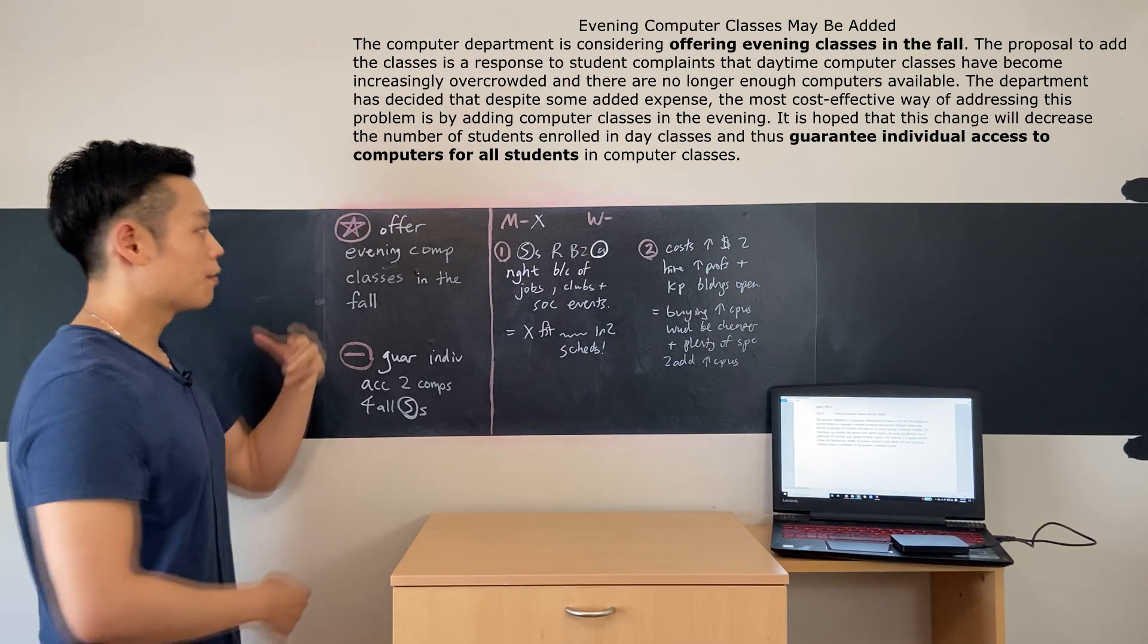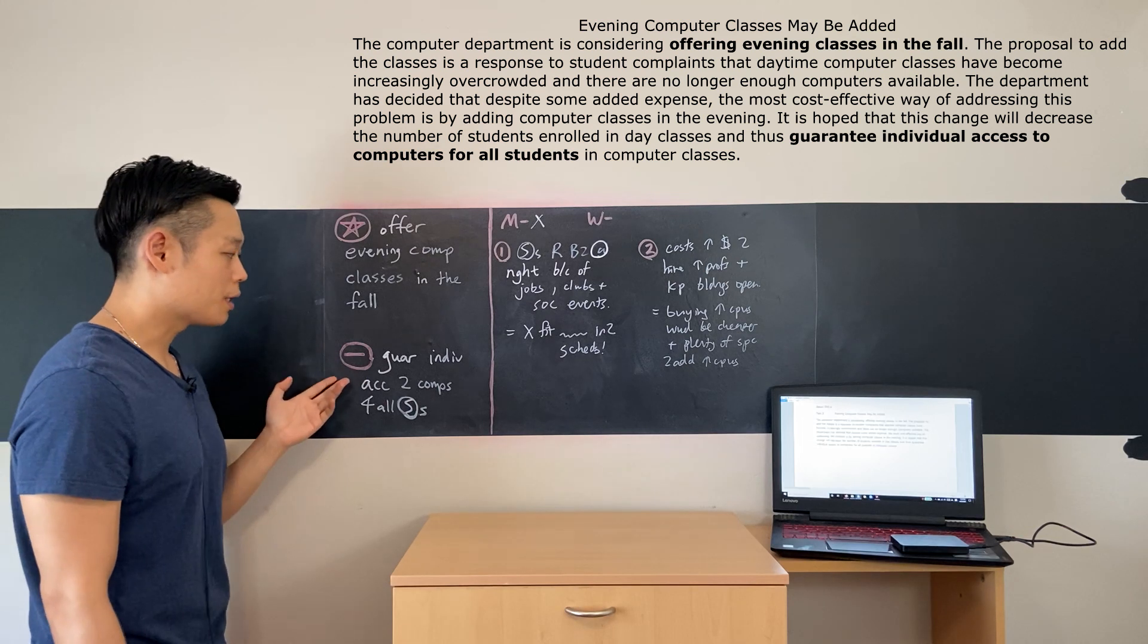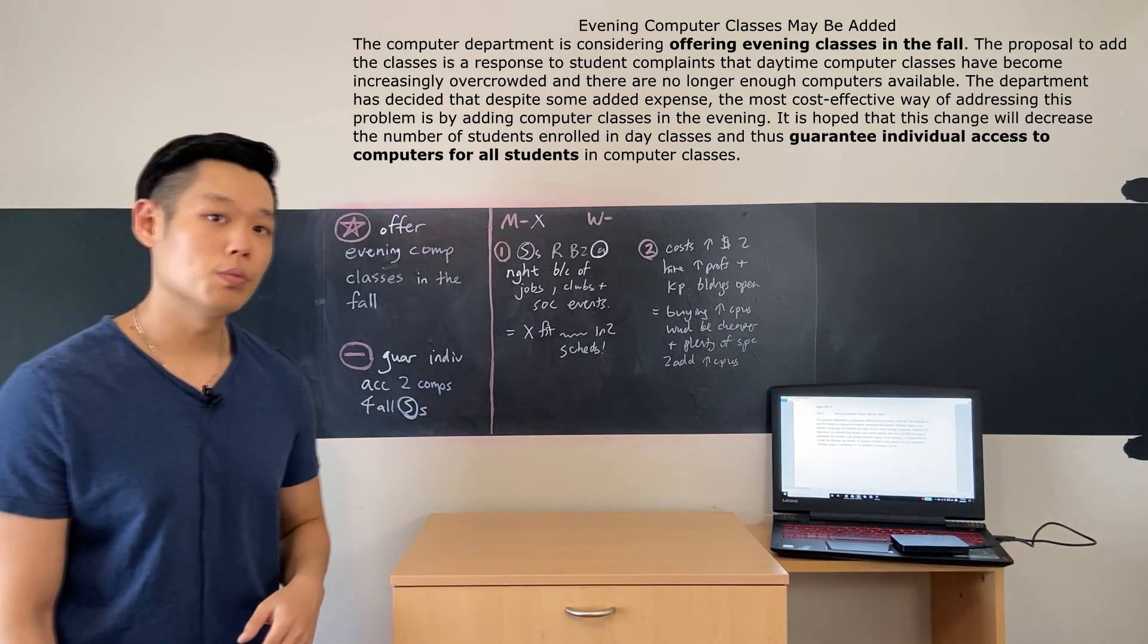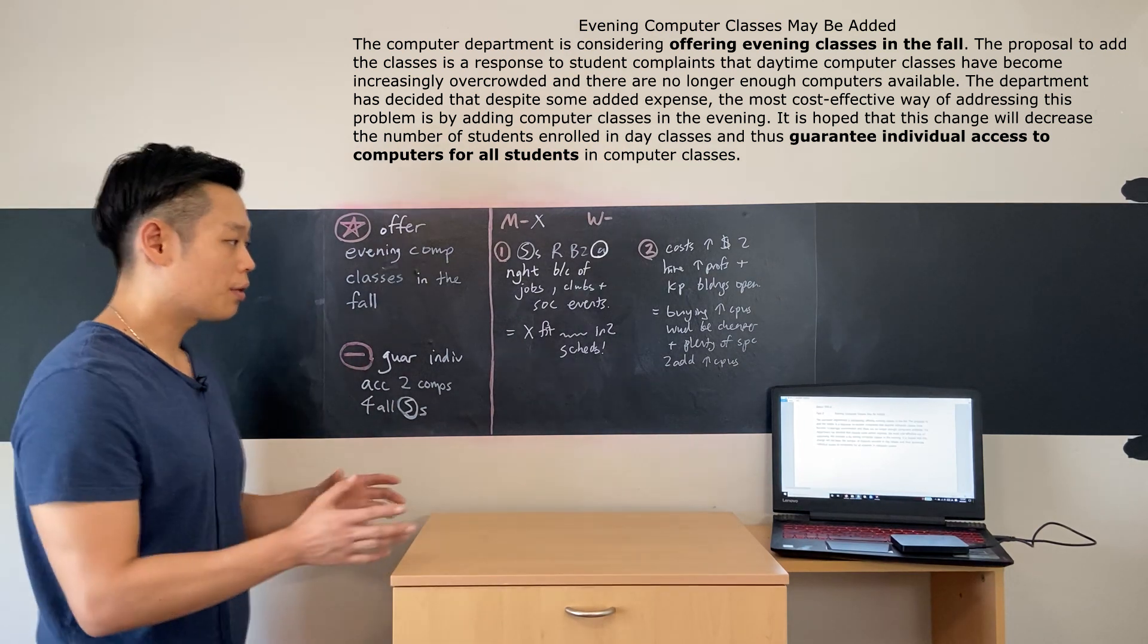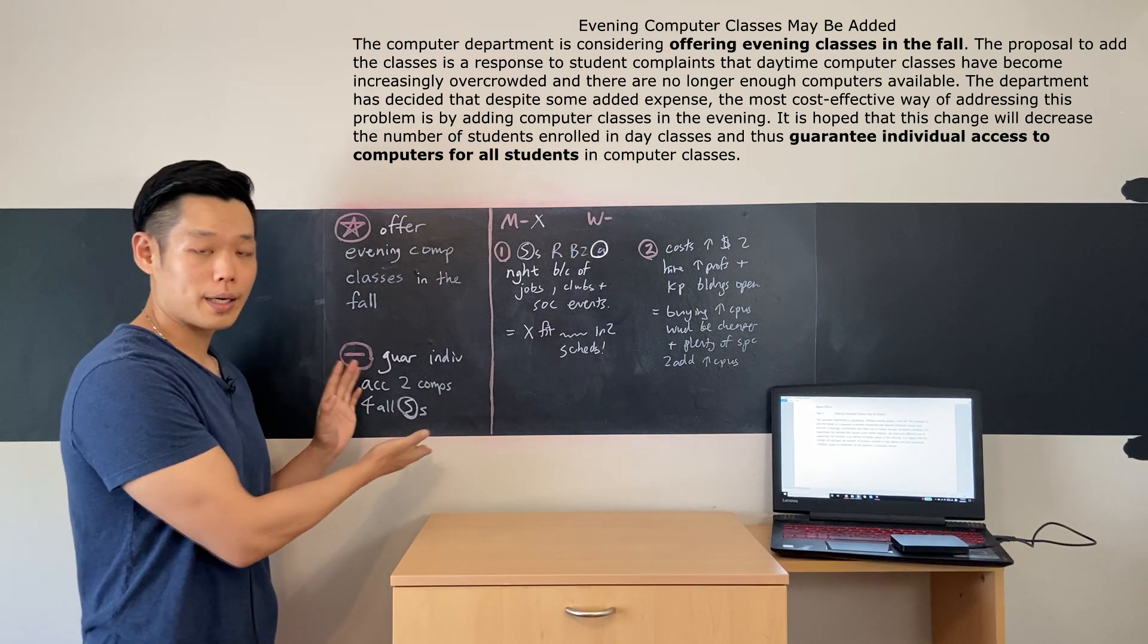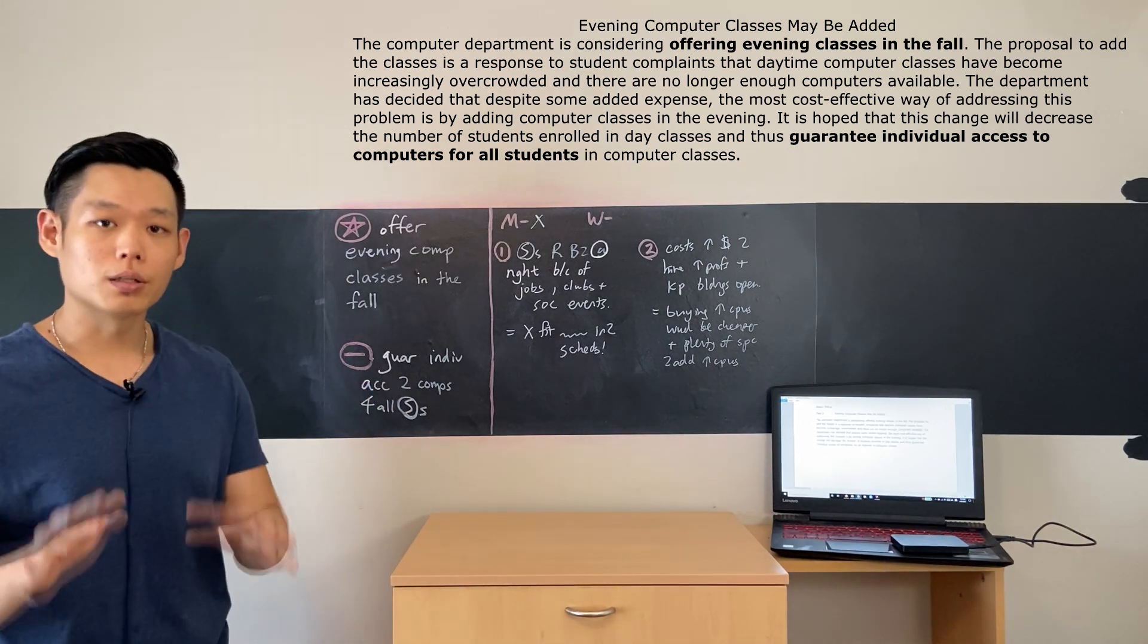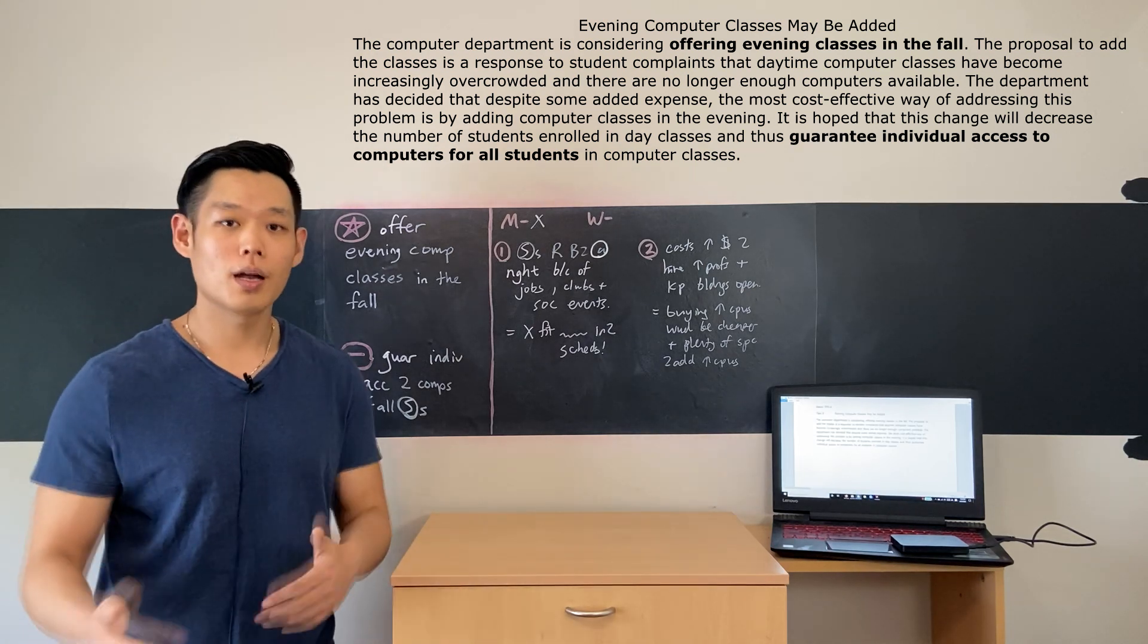So if the main character doesn't like the announcement, I'm gonna say: 'Even though the school believes that this decision will guarantee individual access to computers for all students, the man opposes the university's new plan.' At the test you could have said either 'decrease the number of students enrolled in day classes' or the detail that I'm seeing right now, but I personally believe that this is the better information to mention. As long as you speak fluently and say something that's not completely off topic, you're good to go.